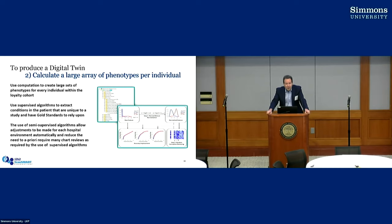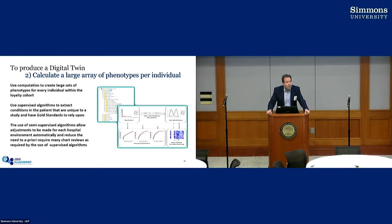Once we've done that, we then go ahead and calculate the large array of phenotypes for each individual. We'll use different kinds of methods, but at the end of the day we're talking about 100 to 200 phenotypes per patient — not just one or two or 20. It's a lot of computation. That's one of the main reasons why this work is really important — Dell brings a lot to the table in terms of how that computation can be optimized.